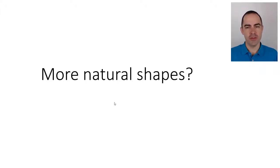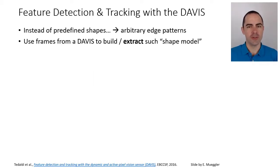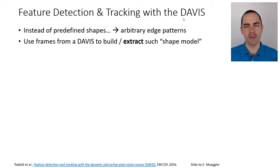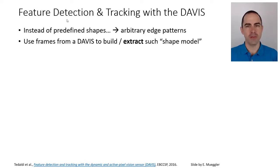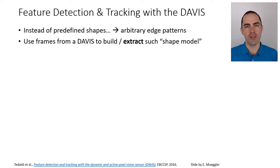Can we track more natural shapes rather than user-defined ones? Let's look at some detection and tracking algorithms. The idea proposed in a 2016 paper is to use the DAVIS camera — a device that has both an event-based sensor and a frame-based sensor on the same pixel array. It produces events and frames at around 25–50 Hz. Instead of predefined user-specified shapes, we will extract them from the device — specifically from the frames.